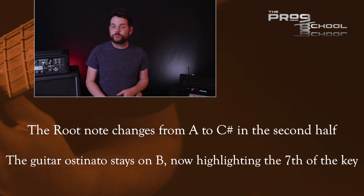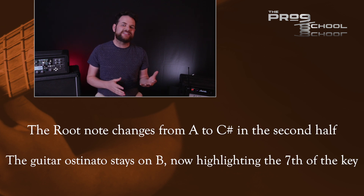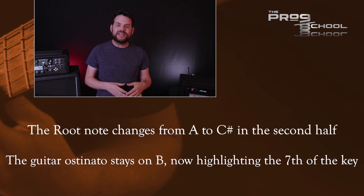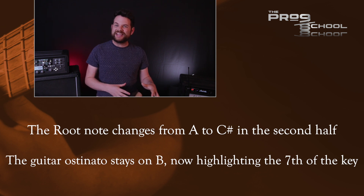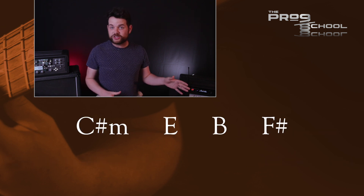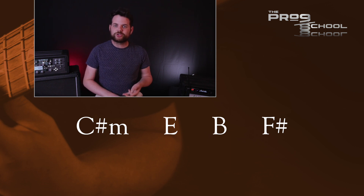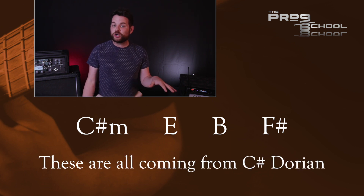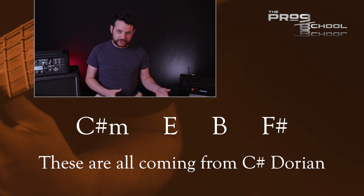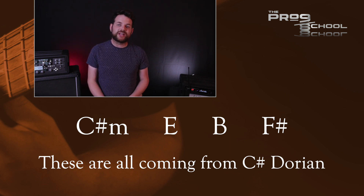In the second half of the tune, the root note moves from A to C sharp. This makes the guitar ostinato note of B the minor seventh in the key, once again really highlighting an extended sound. The main chord progression here is C sharp minor, E major, B major, and F sharp major. This is coming from the C sharp Dorian mode — another common sound in modern guitar music. It's a minor sound, but an uplifting minor sound, and it's perfect for Pliny's music.